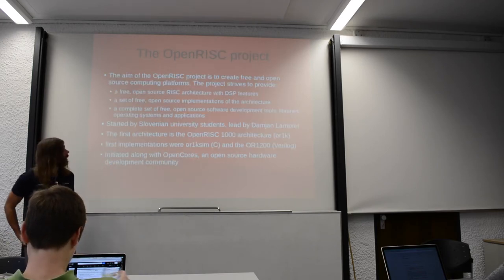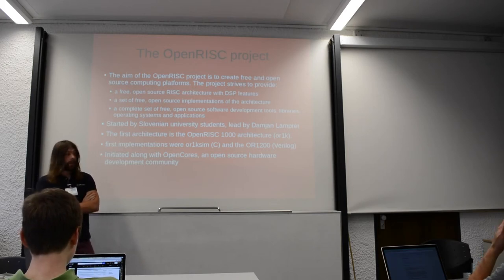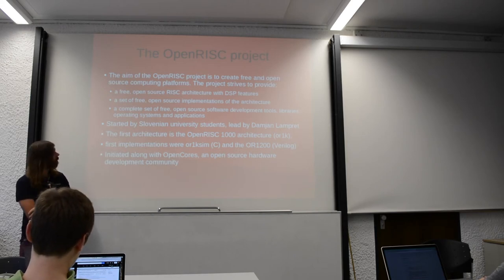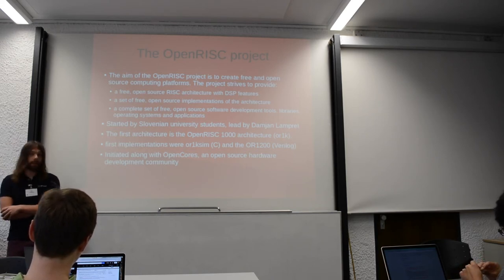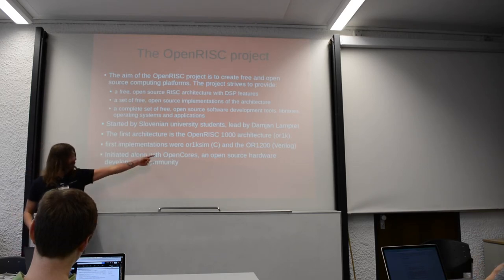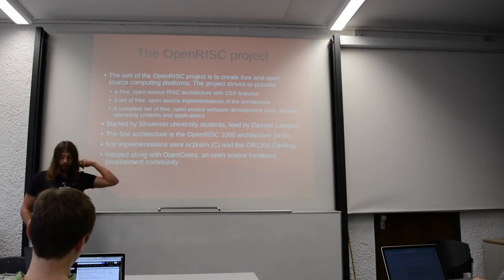The OpenRISC project aims to define a free, open-source architecture and provide implementations. It's probably the oldest one we can find that is still active. The first architecture was OpenRISC 1000, which is still the only one we use. It was implemented as the OR1K SIM, which is the C model, and the OR1200, which is a very large RTL model of the processor.